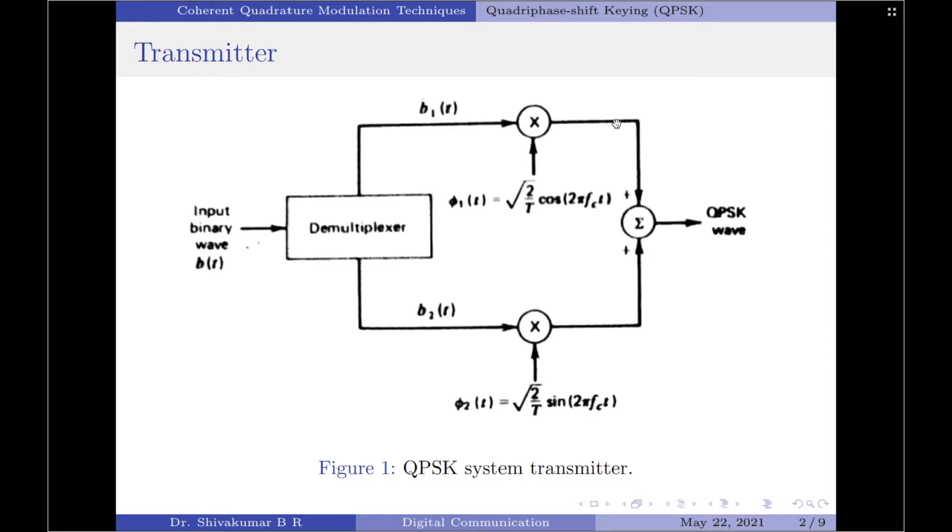Therefore, the QPSK transmitter generates a pair of binary PSK waves, and these can be detected independently at the receiver due to the orthogonality of the basis functions phi1(t) and phi2(t). Finally, the two binary PSK waves are added to produce the desired QPSK wave.